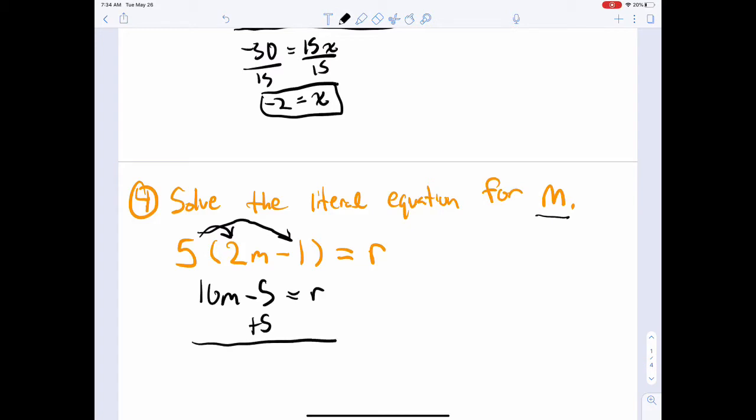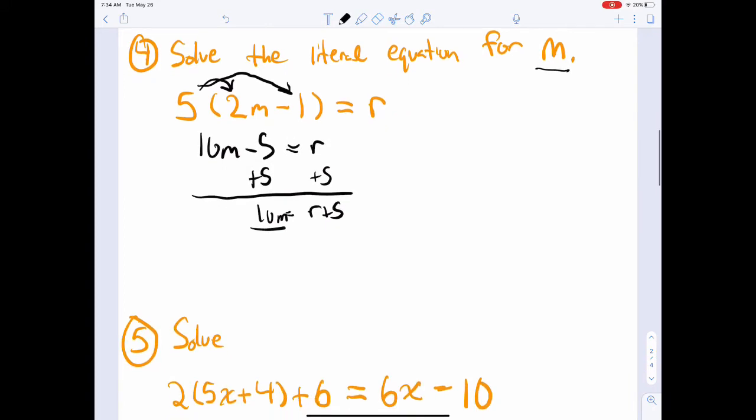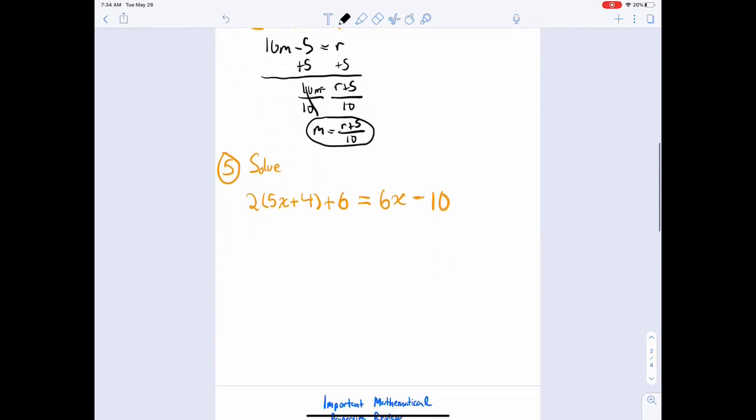And we're pretty much just at a two-step equation. So we can add 5 to both sides, you get r plus 5 equals 10m. And then we divide by 10 to get m by itself. So you get m equals r plus 5 over 10.